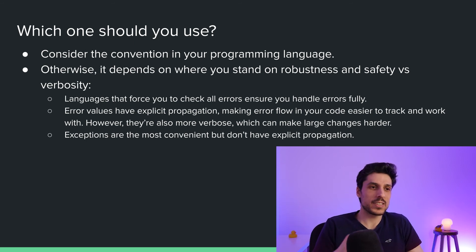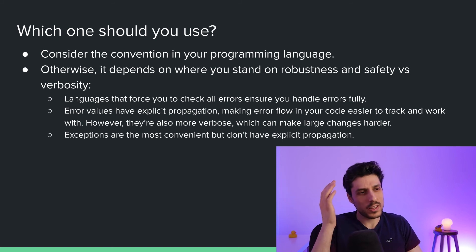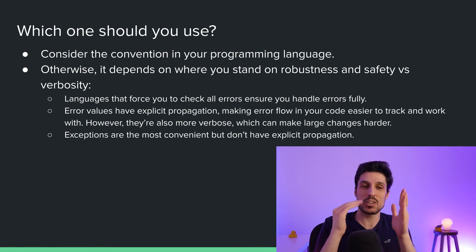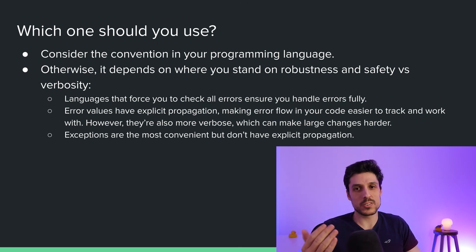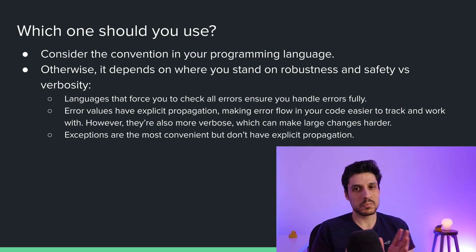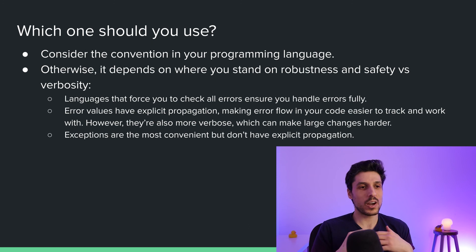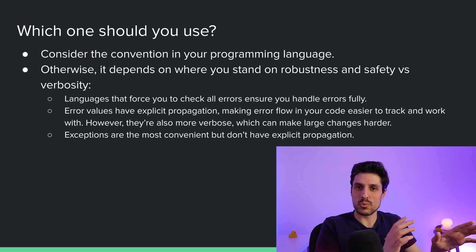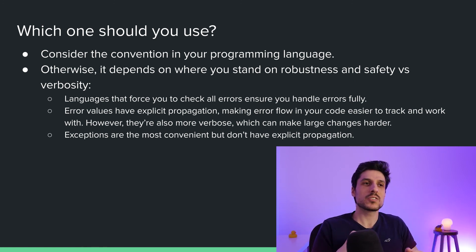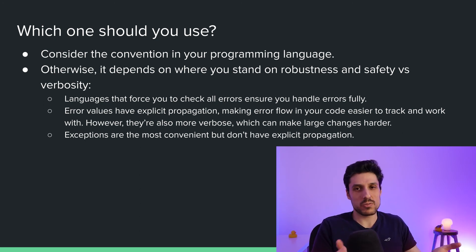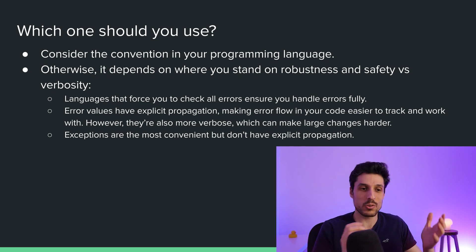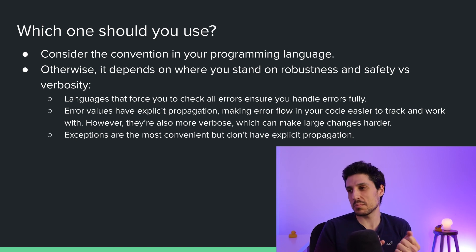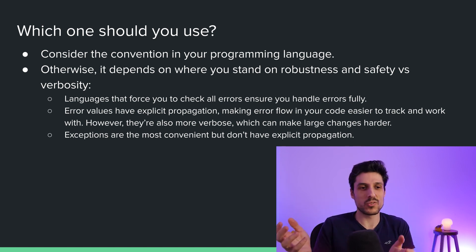So it's up to you to decide where you stand on that scale of safety versus verbosity. How I think of it: if you want maximum safety, I would personally use a language that forces you to check for all errors and forces explicit propagation. I consider one level lower to be error values, because — assuming you don't ignore checking them — the explicit propagation is useful. And finally, the least safe but also most convenient are normal exceptions, where you can still do all your error checking thoroughly, but you need to be disciplined to actually do that. The bubbling automatically makes them very convenient. My personal preference depends on what kind of project I'm working on — if it's a super critical project I lean towards maximum safety, and if it's a normal project that isn't super critical, I lean more towards normal exceptions for their convenience.